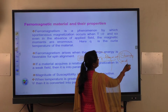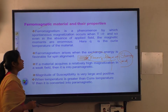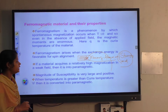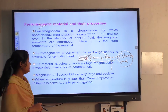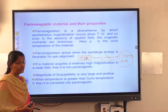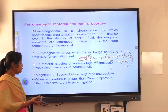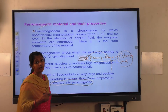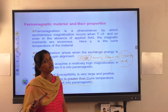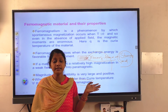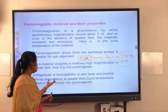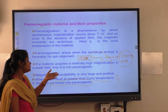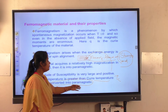Ferromagnetism arises when the exchange energy is favorable for spin alignment. If a material acquires a relatively high magnetization in a weak field, it is not a paramagnetic material. The magnitude of susceptibility is very large and positive. When the temperature is greater than the Curie point, the ferromagnetic material is converted into a paramagnetic material.